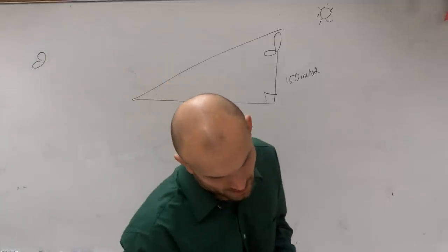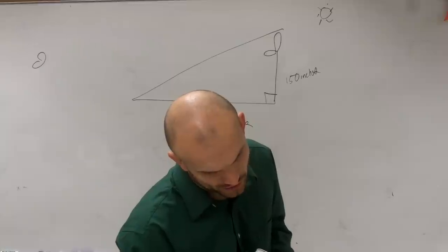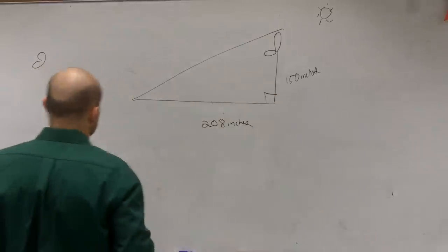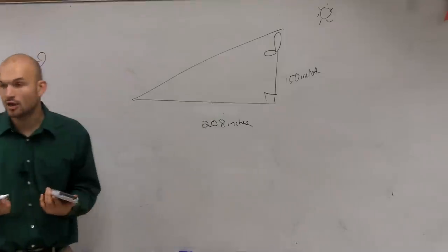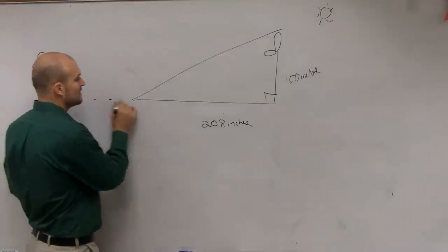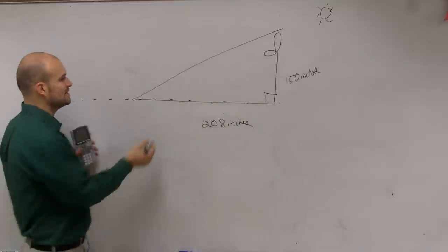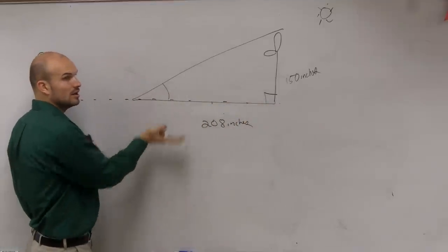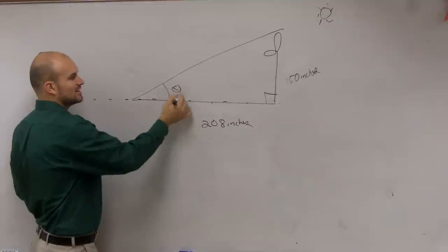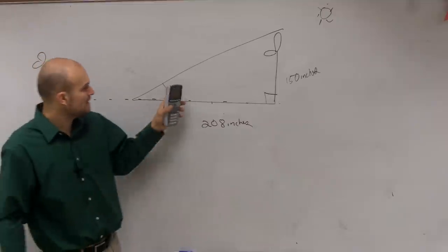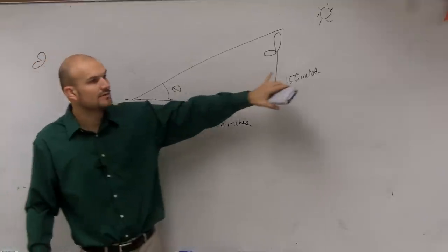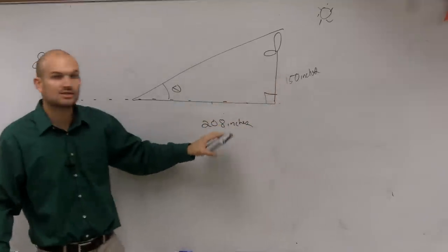So it says use trigonometric functions to write the equation involving the unknown angle of the sun. Find the angle of elevation of the sun. So what we're going to do is find the angle of elevation. Remember, angle of elevation, we have to have a horizontal line. Angle of elevation is going to be the angle above your horizontal, which in this case will be theta. So therefore, I have theta and I have my opposite side and my adjacent side.